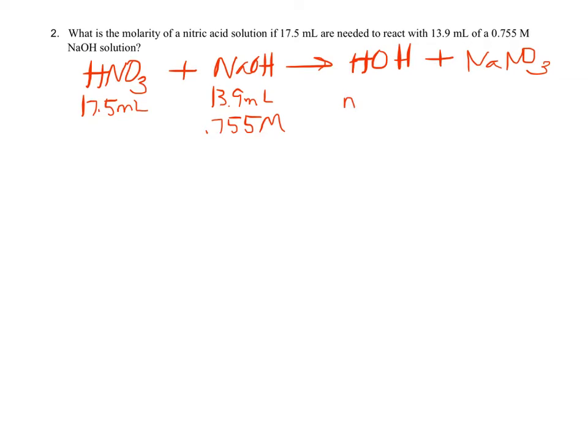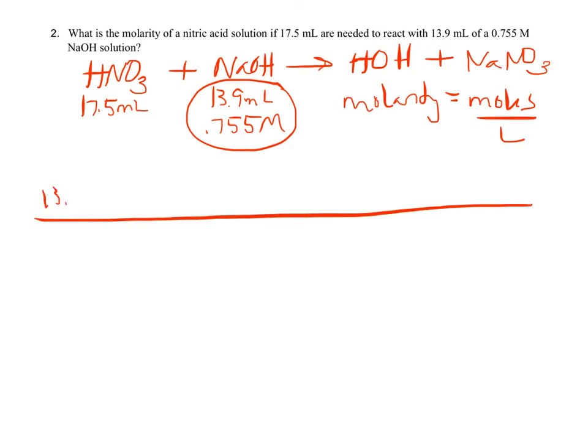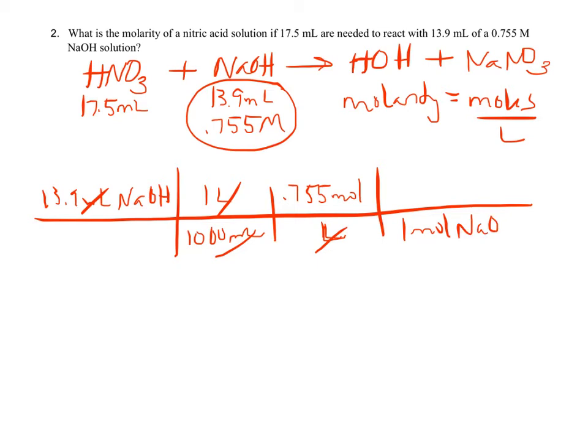This problem asks for molarity, so molarity is moles per liter, so I need to understand that concept. I have two volumes, I have to decide which one I want to start with. The one that I have the most information about that has something already paired with it is the sodium hydroxide. So my bridge problem is going to start with 13.9 milliliters of NaOH. Since I have milliliters and molarity is liters, I'm going to convert milliliters to liters, and then I'm going to use the molarity, 0.755 moles of NaOH to 1 liter. My liters cancel, and then I'm going to do my 1 mol of NaOH to 1 mol of nitric acid, HNO3.